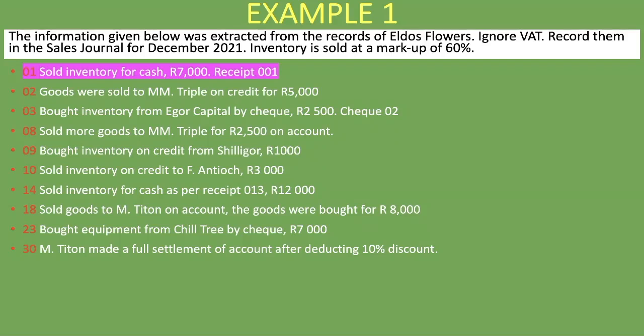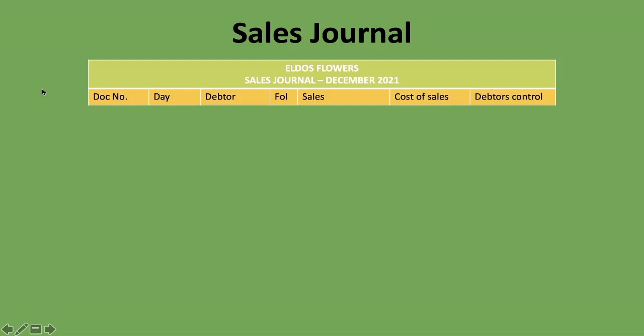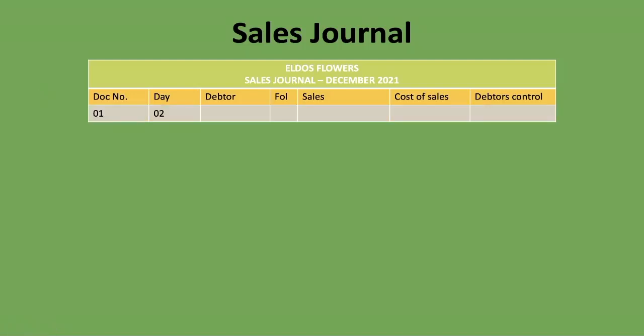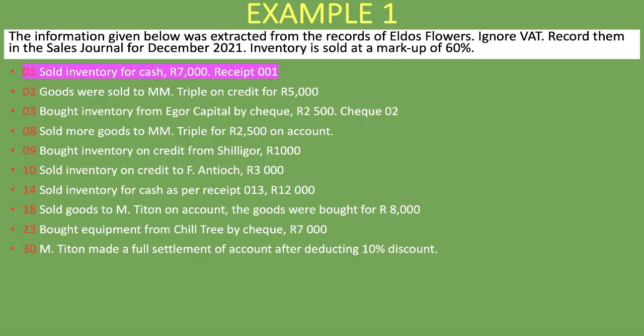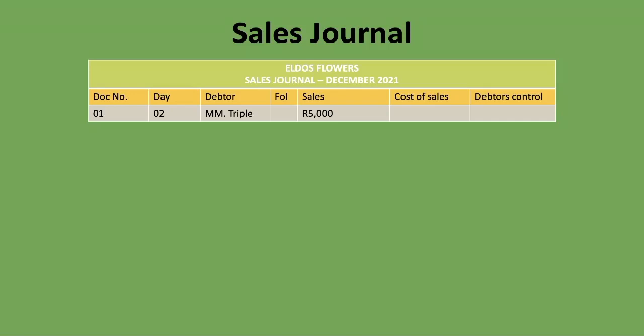On the 2nd, goods were sold to MM Triple on credit for 5,000 Rand. We're not given a document number, so we use sequence 01. The day is 02, and the debtor's name is MM Triple. We put 5,000 Rand under sales, and the same amount under debtors control, since we're ignoring VAT.